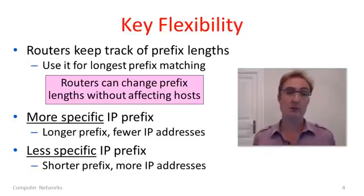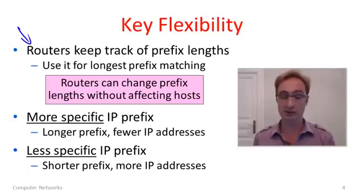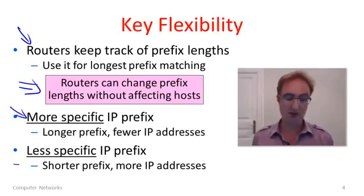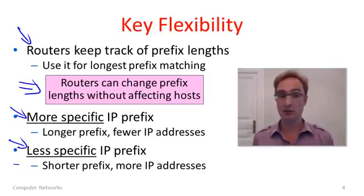The key flexibility we get from using prefixes is that it's routers that keep track of the length of different prefixes. They use it for the longest prefix matching algorithm to decide which way to forward traffic. Because it's routers that keep track of the length of prefixes, not hosts, routers can change the lengths of prefixes without affecting the hosts for the most part. We can change an IP prefix to make it more specific by lengthening the prefix, turning it into a block with fewer addresses — dividing a big block into blocks with fewer addresses. Or we can change the prefix to make it less specific, taking several blocks and joining them together into a bigger block.